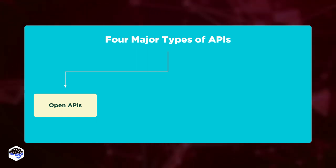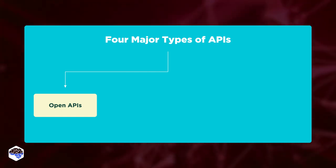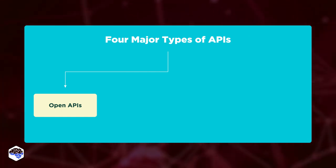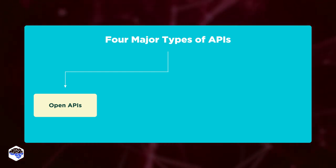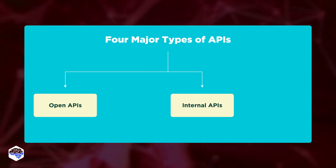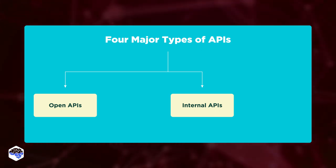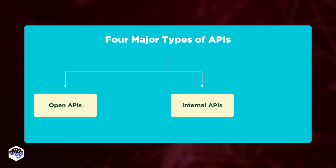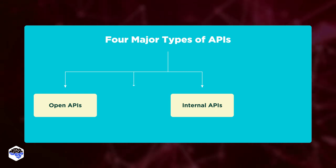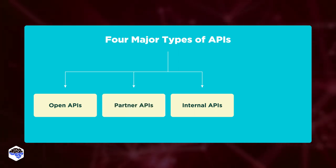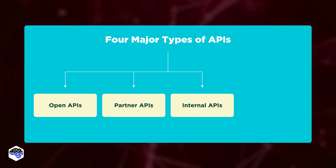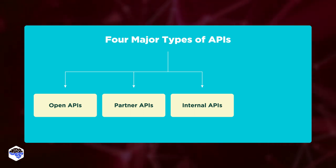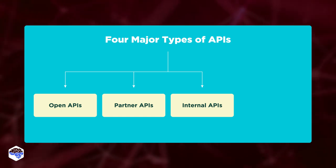Open APIs are available to the public. While they are secure, the mechanisms can be accessed, added, and changed by anyone. Internal APIs are only available to internal systems — to use this type of API, you need specific rights or licenses. Partner APIs are not publicly available, but like internal APIs, they are only available to certain groups of users through authentication mechanisms.